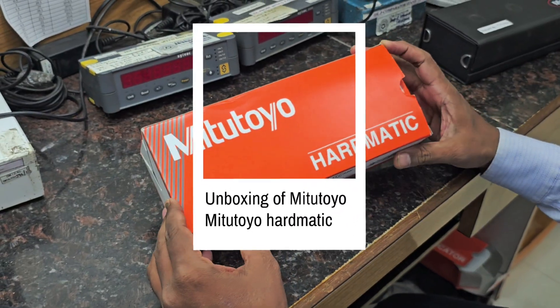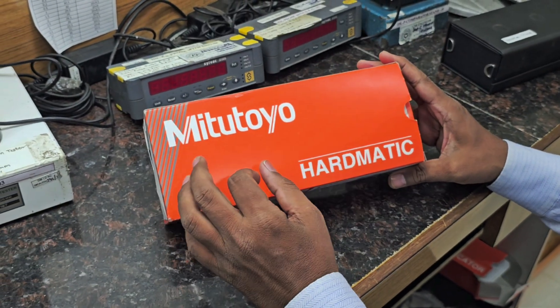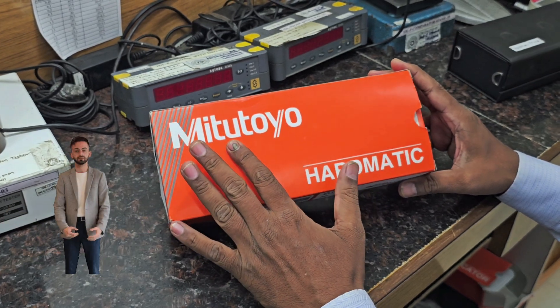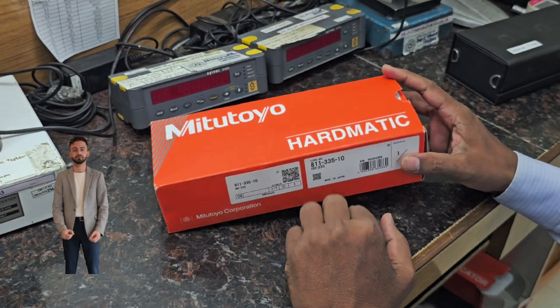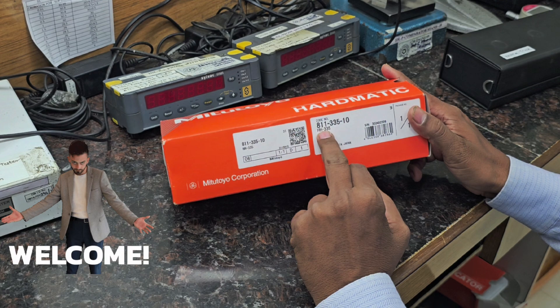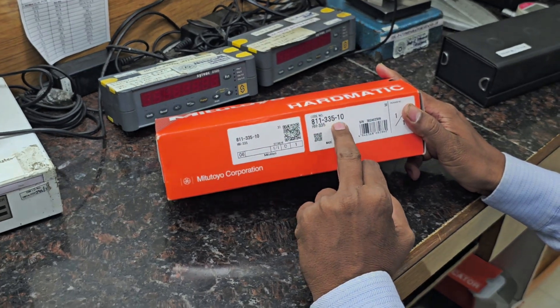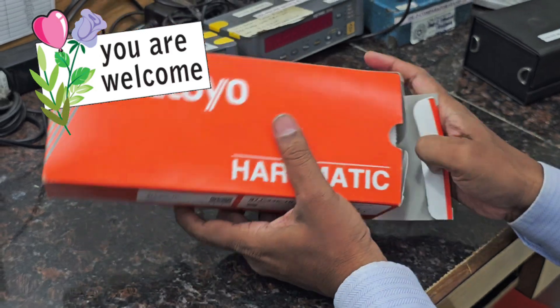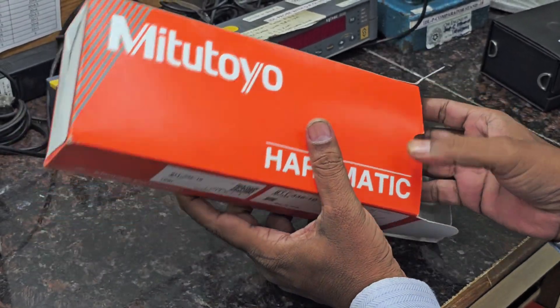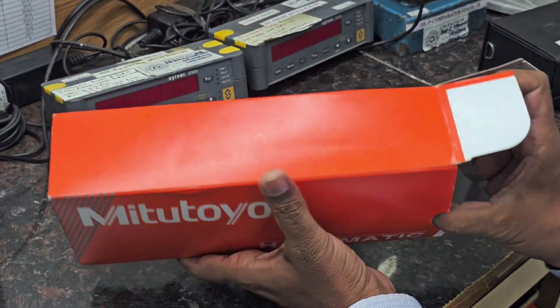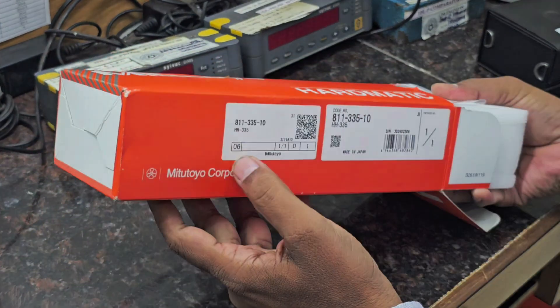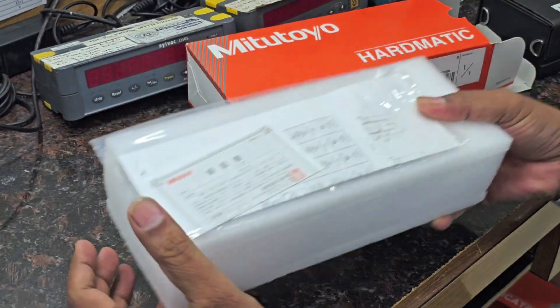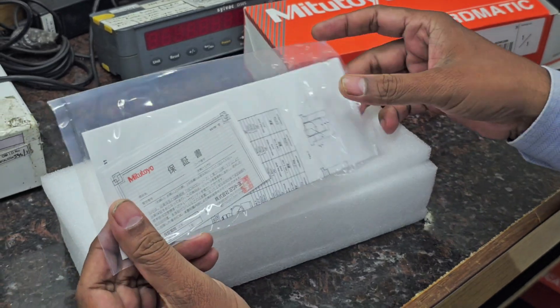Hi, welcome again. What is inside Mitutoyo Hardmatic? Model number is 811-335-10. The Hardmatic of Mitutoyo comes in a corrugated box, and inside is a plastic cover.